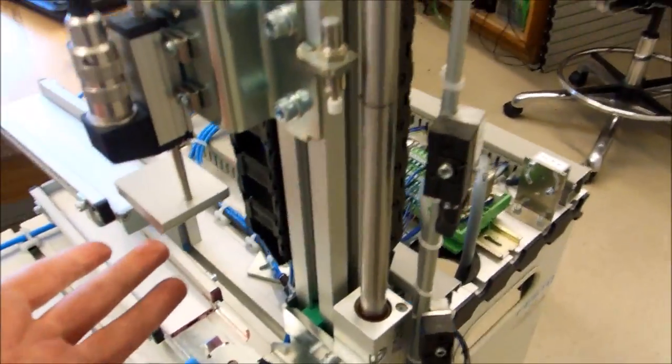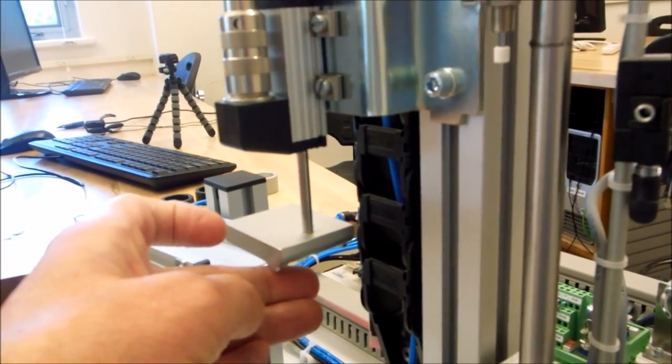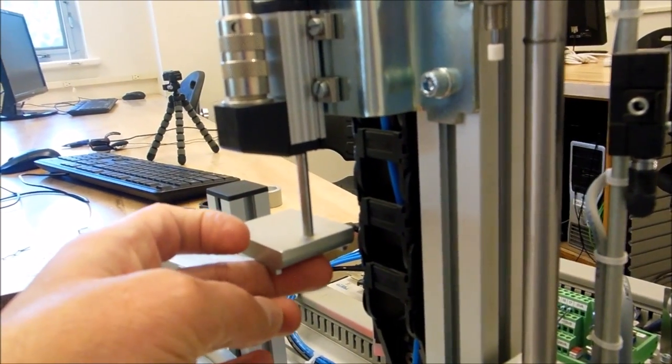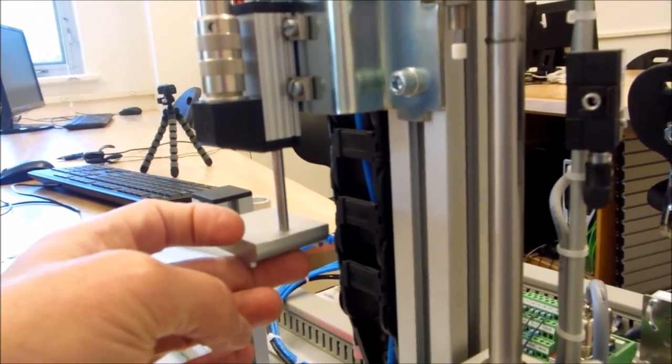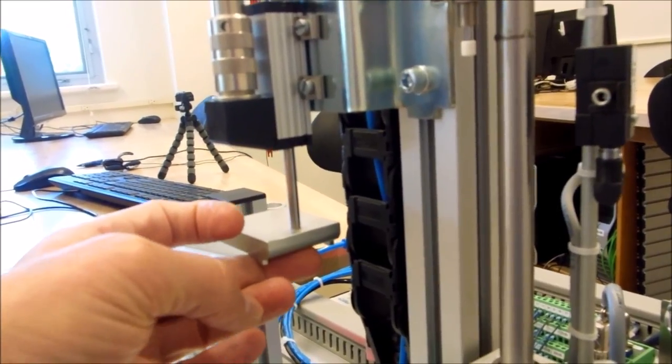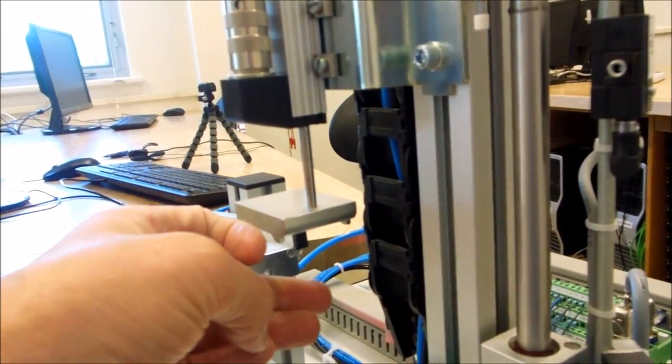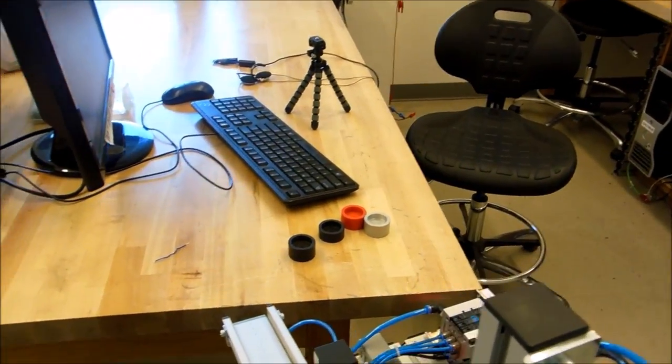Now, over here is the actual measuring device. What happens is the part comes up here and comes up to this pressure plate. This pressure plate is hooked to an analog potentiometer, and we get an analog voltage out of this depending on how much the part deflects this pressure plate. And that's how we determine whether the part is good or defective.